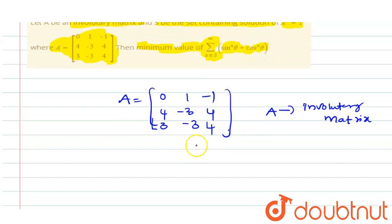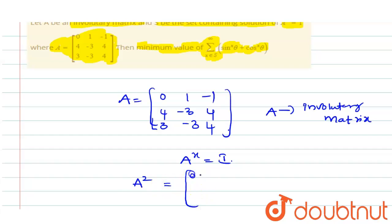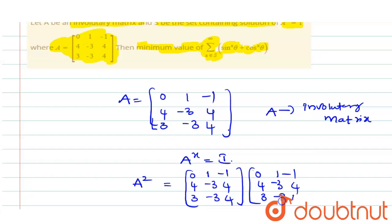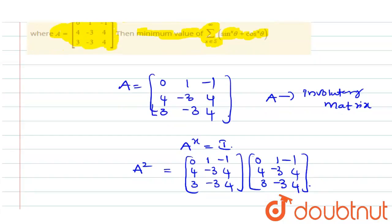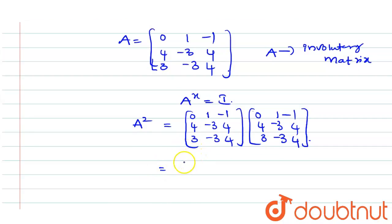Since A is an involutory matrix, A^x = I. Substituting x = 1 is not useful here. So we substitute x = 2 and compute A² = A · A. We begin multiplying the matrices: for the first row, 0·0 + 1·4 + (-1)·3 = 4 - 3 = 1, and 0·0 + 1·(-3) + (-1)·(-3) = -3 + 3 = 0.